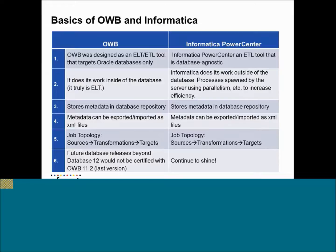Here are some of the similarities and differences between OWP and Informatica. OWP is tightly coupled with the Oracle database and it's more of an ELT tool, which loads data to Oracle and does all the transformations. Whereas Informatica has got its own server where it does all the transformations and can load any target, not only database targets. Both tools store their metadata in databases which can be exported and imported as XML — that is one similarity. The other is the structure of the jobs: both tools have a set of sources undergoing some transformations, finally getting loaded to some targets.